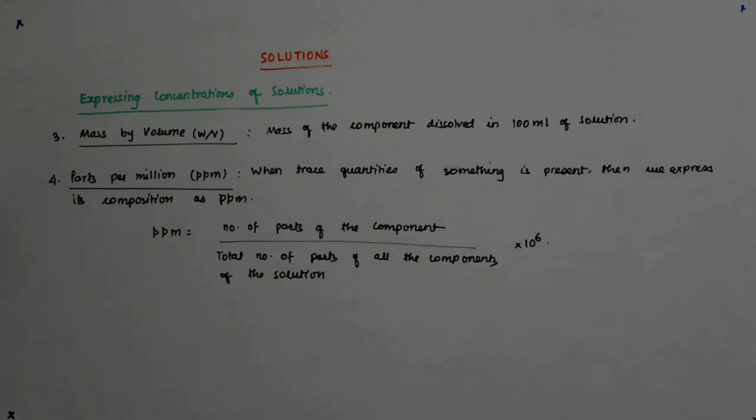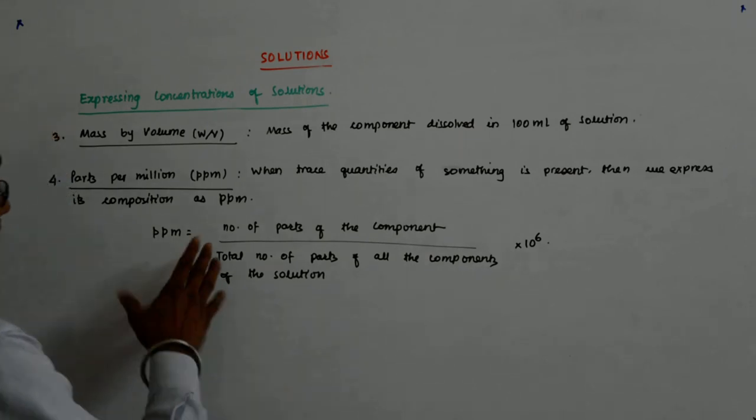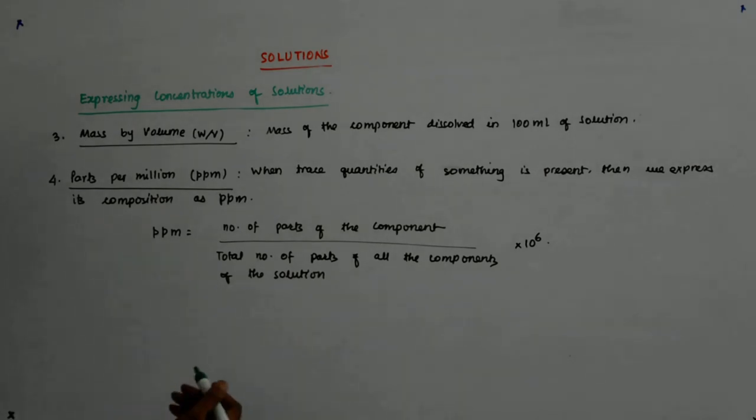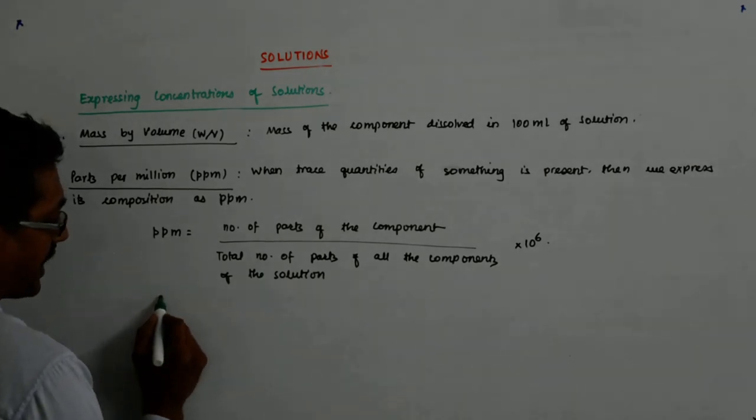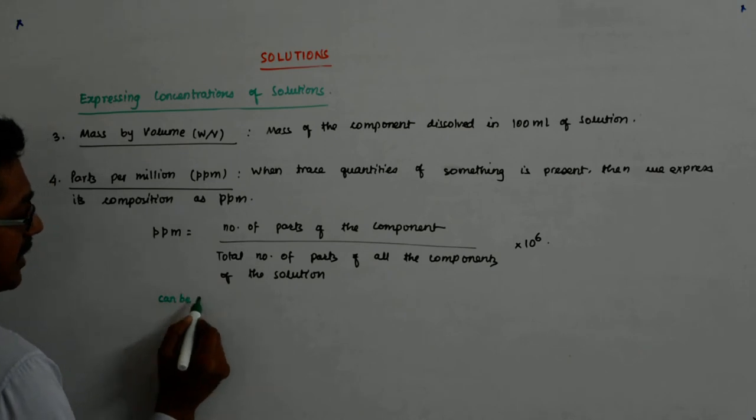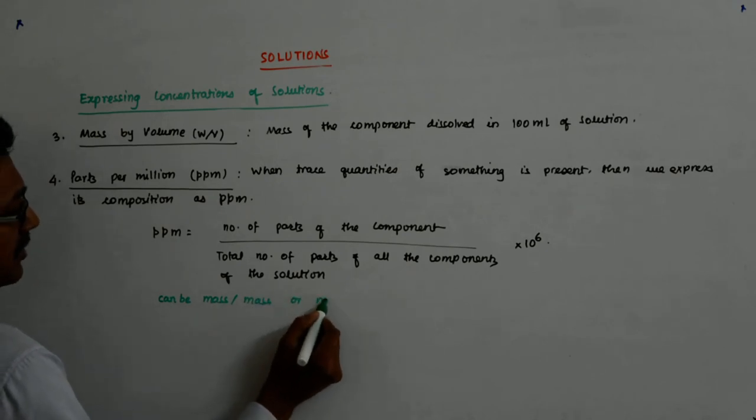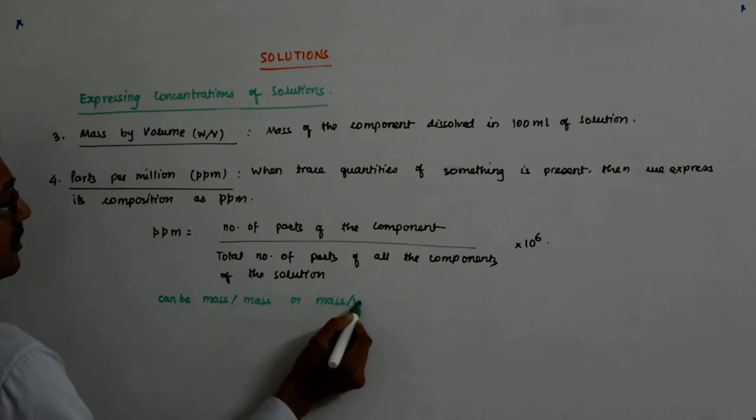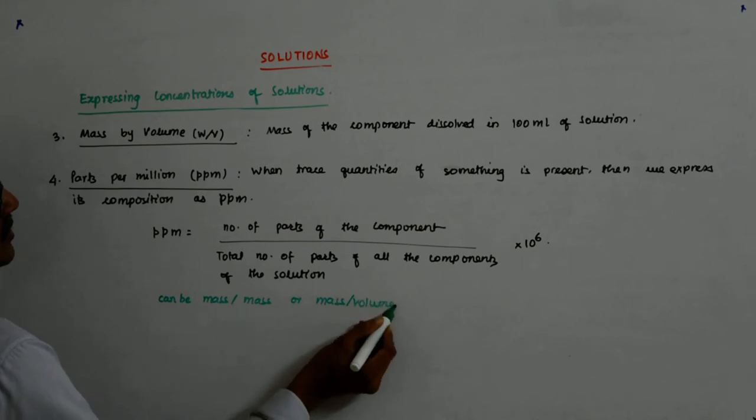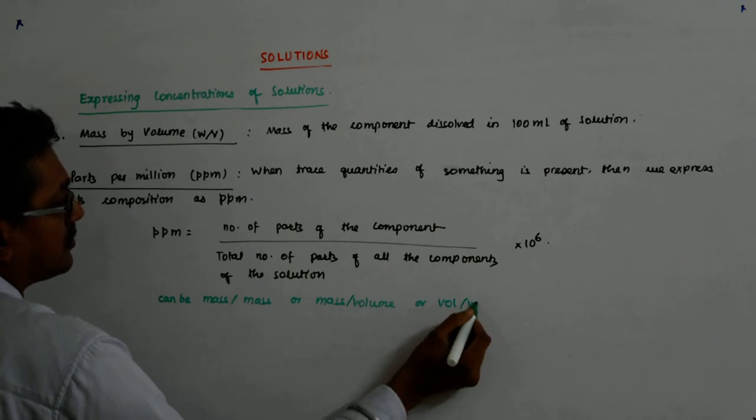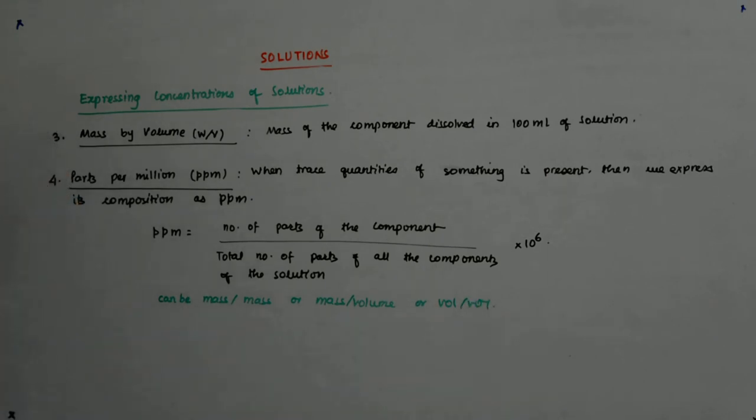Mass to mass, volume to volume, mass to volume. So you can, fine? But normally, normally, you will find it is numbers, fine? So it can be mass upon mass, or mass by volume, or volume by volume.